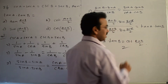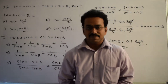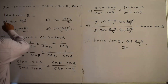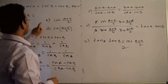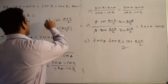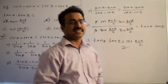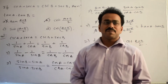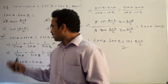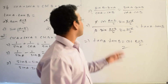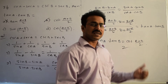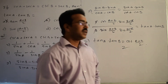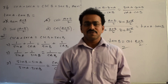Now let's compare with the given options. The first option, tan((A+B)/2), is incorrect. The second option, cot((A+B)/2), is correct — the rest are incorrect. To summarize: we wrote in terms of sines and cosines, applied the formulas for sin C minus sin D and cos C minus cos D, and finally got tan A · tan B equals cot((A+B)/2). Thanks for watching, all the best.